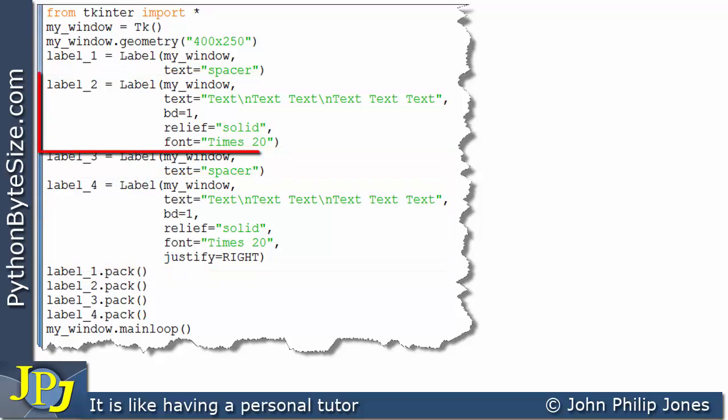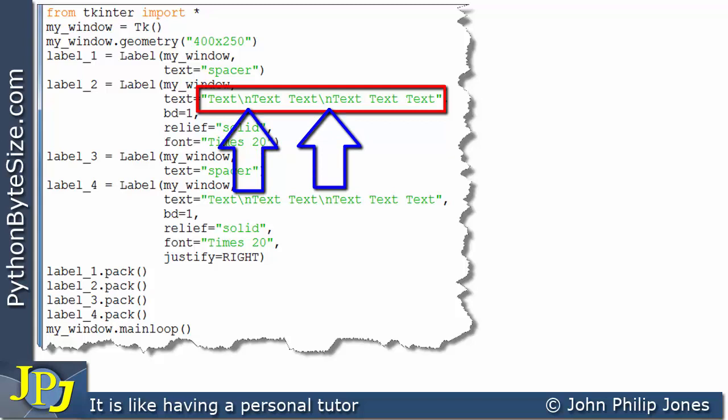If we have a look at label 2, you can see on this slide we're outputting this text within the label. There are two line breaks here and here. This means we're going to be outputting text on one line, text text on the second line, and three lots of text, text text text.